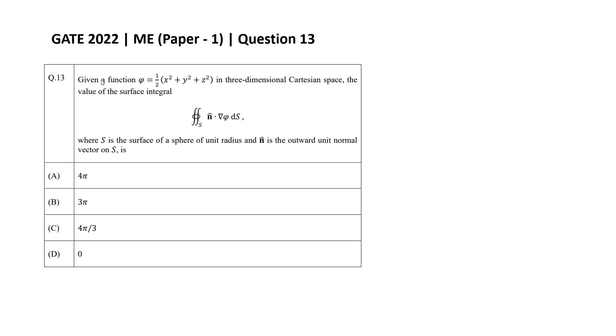Hello everyone, in this video we will solve GATE 2022 ME Set 1 Question Number 13. This question is from the topic of vector calculus in engineering mathematics. The question is: given a function φ which is equal to half x square plus y square plus z square.